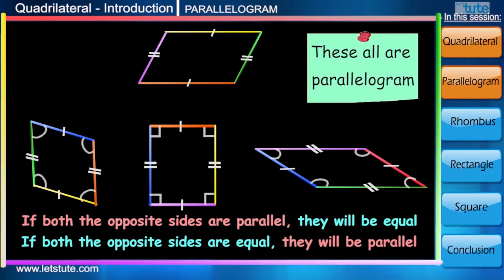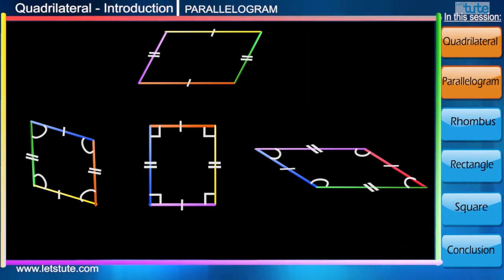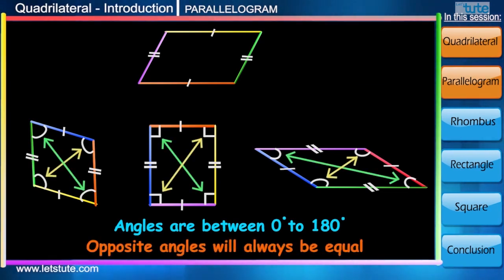Let's have a look at the angles. We can say that there is no specific measurement. So we say that a parallelogram may have any angles between 0 to 180 degrees. But its opposite angles will always be equal.